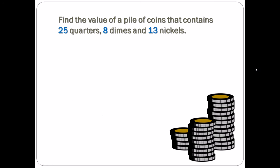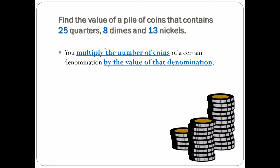I want you to find the value of a pile of coins that contains 25 quarters, 8 dimes, and 13 nickels. Remember, you multiply the number of coins of a certain denomination by the value of the denomination. These are rather intuitive because I'm giving you how many are in each pile. We could probably go to the second grade classroom and say, 'Hey second graders, figure this out.' Maybe they've got this down.